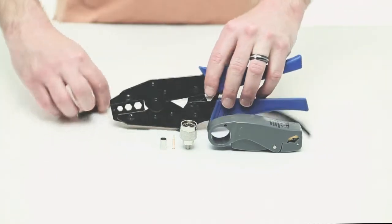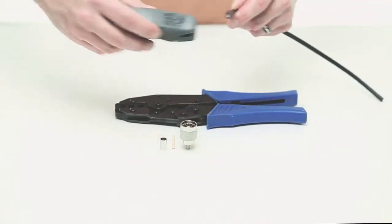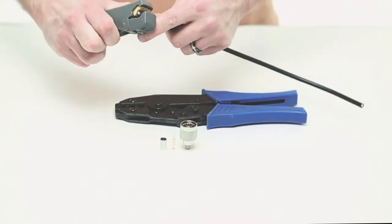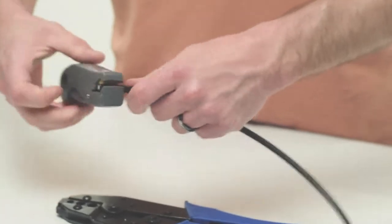To begin, take your coax strip tool and remove the jacket and dielectric. By using a coax strip tool, you can remove both at once.